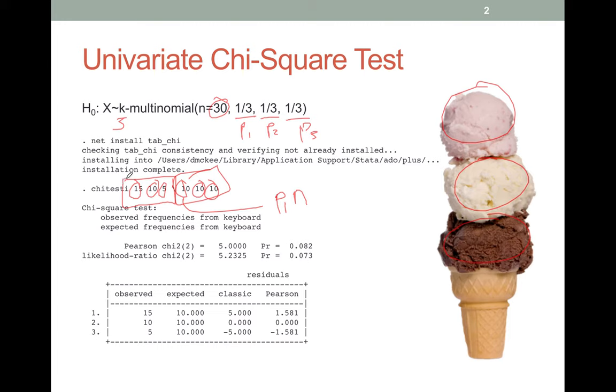Now to do this test, Stata doesn't have a built-in command to do this test. Stata has built-in commands for the bivariate chi-square test which we'll see in a moment, but not for the univariate.